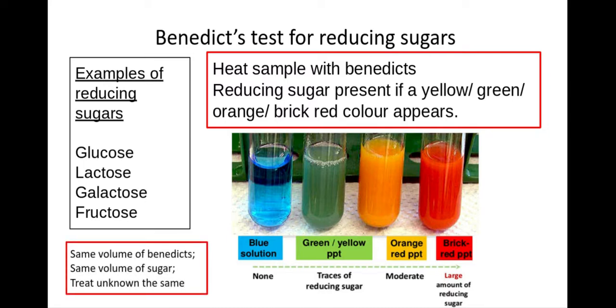Now it's really important here that we use the same volume of Benedict's for each of my samples. I use the same volume of sugar. The concentration is obviously going to be different because I've got different concentrations that I've made in my serial dilution, and it's also really important that I treat my unknown sample in exactly the same way. So using the same volume of Benedict's, using the same volume of that sample.